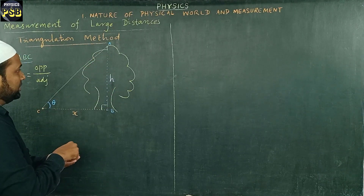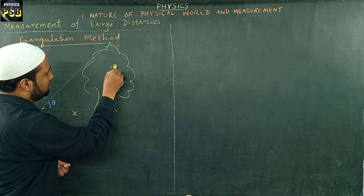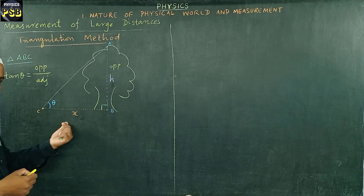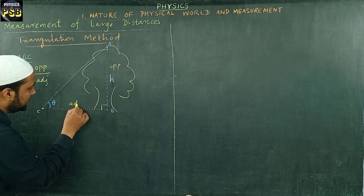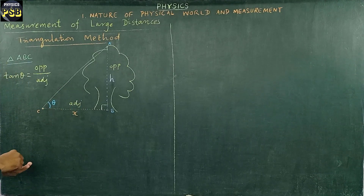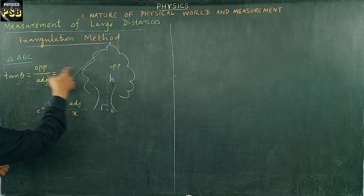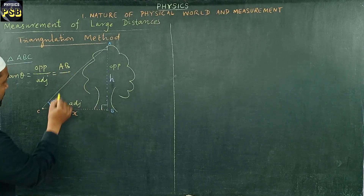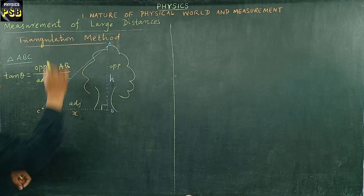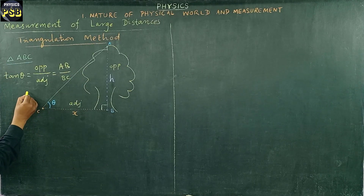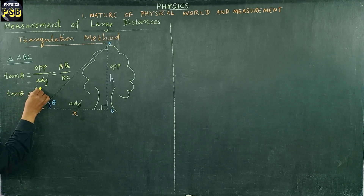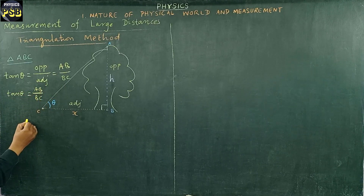The opposite side is AB and the adjacent side is BC. So it is correct to write: tan(theta) = AB / BC. Substituting the values, AB is nothing but H and BC is nothing but X. So tan(theta) = H / X.